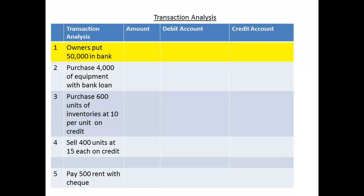In our first transaction, the owners put £50,000 in the bank. If the money is deposited to the bank, then we shall debit an asset account — the cash account. This increases the asset of cash. We shall then credit the capital account, which is an equity account. This increases the equity account for capital.